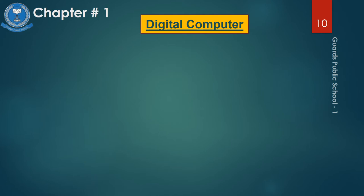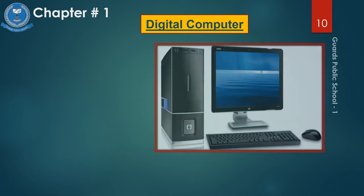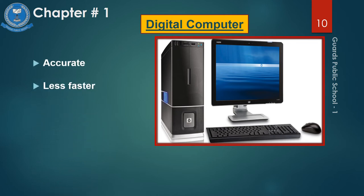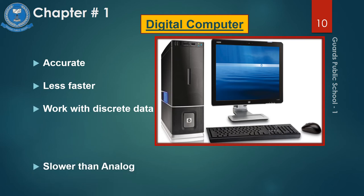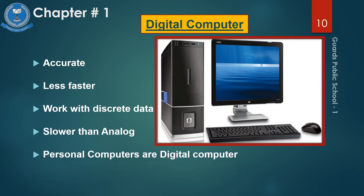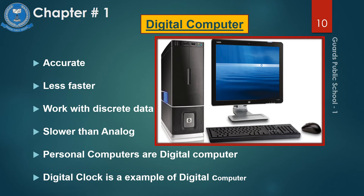Digital computers produce accurate results but are slower than analog computers. They are easy to handle and work with discrete data. Almost all personal computers are digital computers. Very good examples of digital computers are microwaves, phones, and some toys and games.